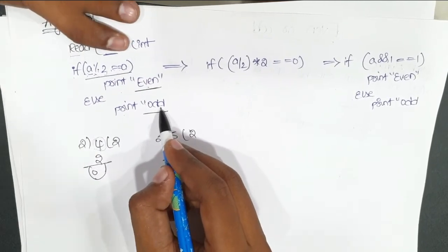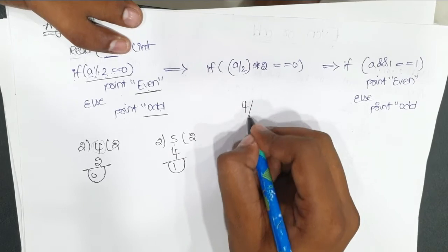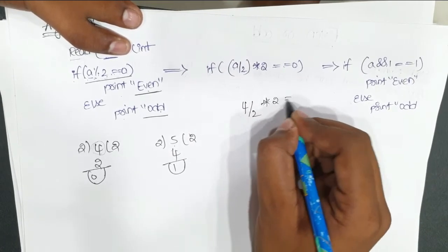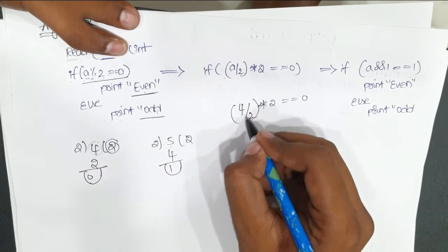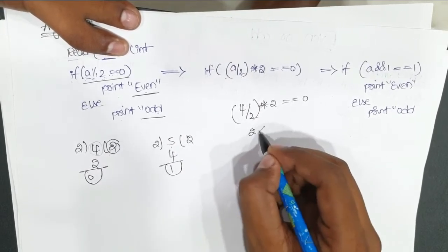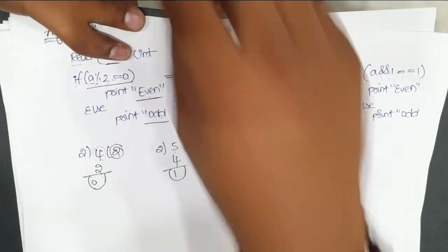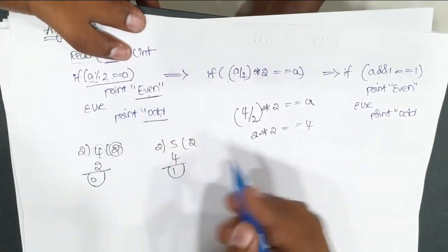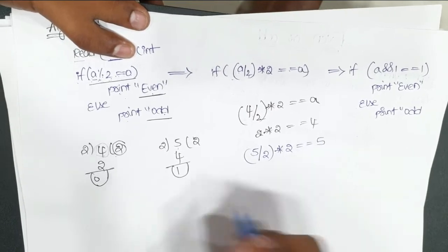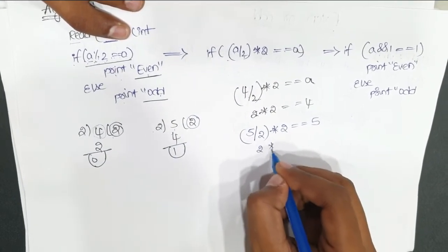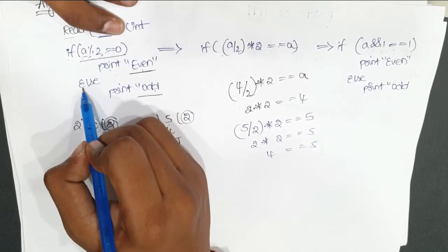The next case uses: if (a/2)*2 equals a, then it is an even number. For a equals 4: 4/2 gives 2 (the integer quotient using the slash operator), and 2 into 2 equals 4, which equals the original value, so it prints 'even'. For a equals 5: 5/2 gives quotient 2, and 2 into 2 equals 4, which is not equal to 5, so it is false and goes to the else part, printing 'odd number'.